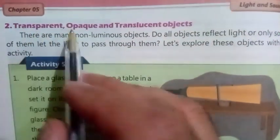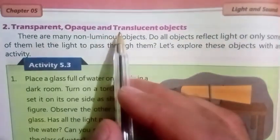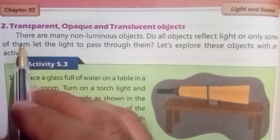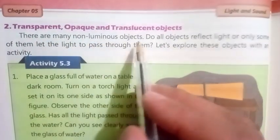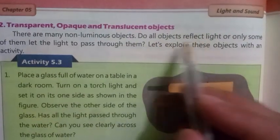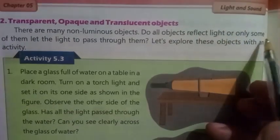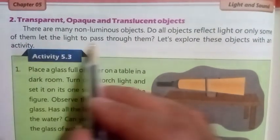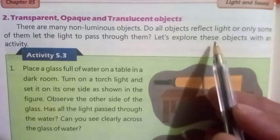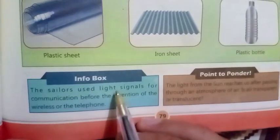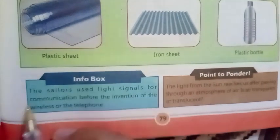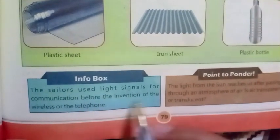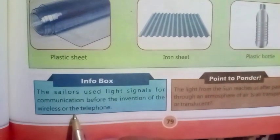Number two: Transparent, opaque, and translucent objects. There are many non-luminous objects. Do all objects reflect light, or do only some of them let light pass through them? Let us explore these objects with an activity. Info box: Sailors use light signals for communication before the invention of wireless or the telephone.